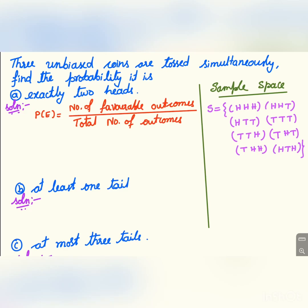Namaste everybody, welcome to my channel. Three unbiased coins are tossed simultaneously. Find the probability of: exactly two heads, at least one tail, and at most three tails.